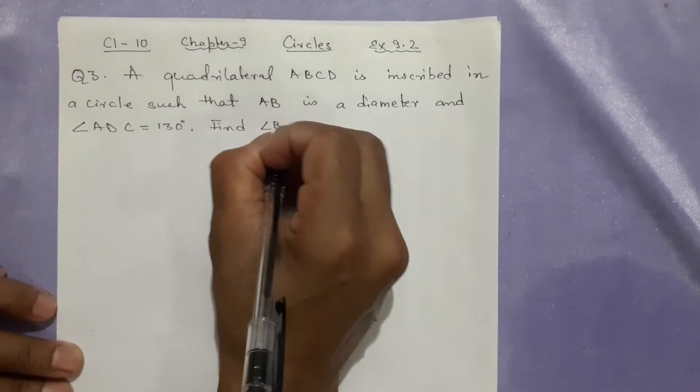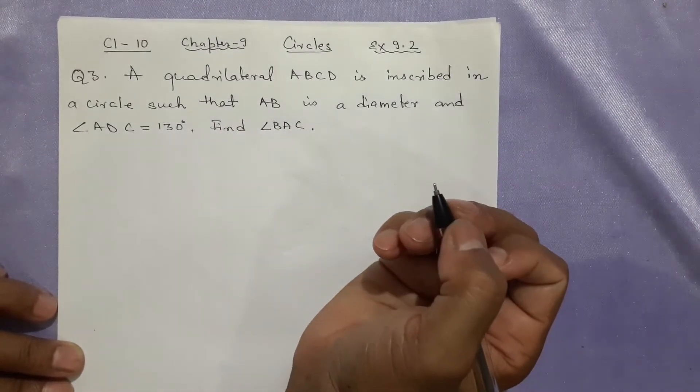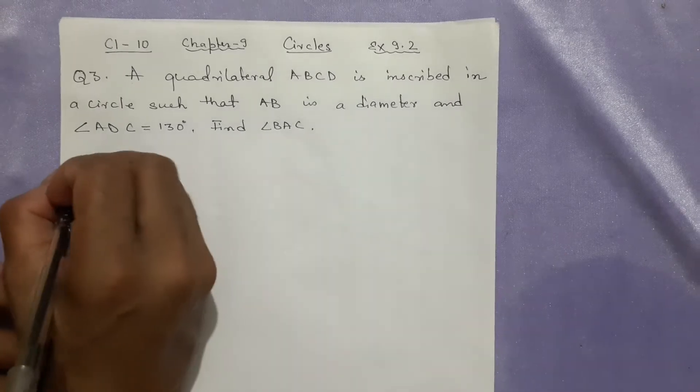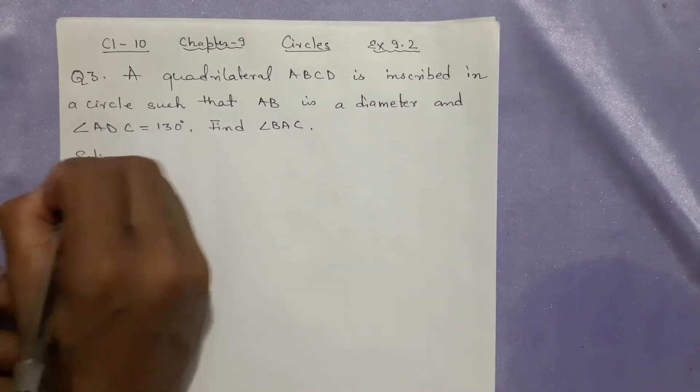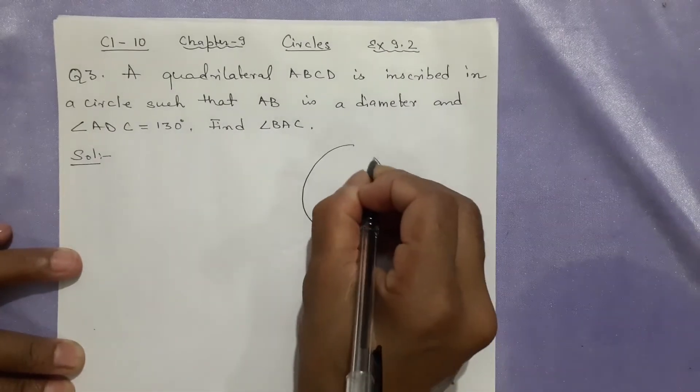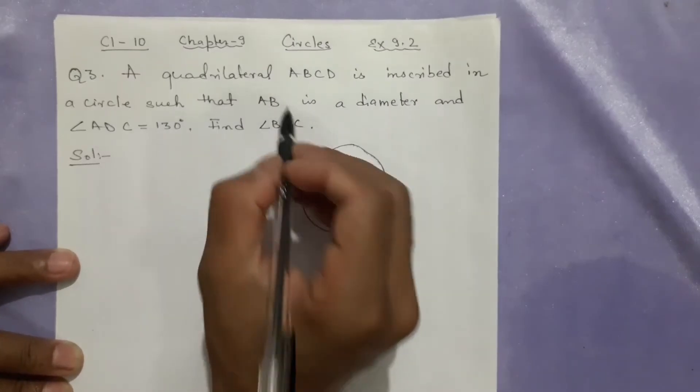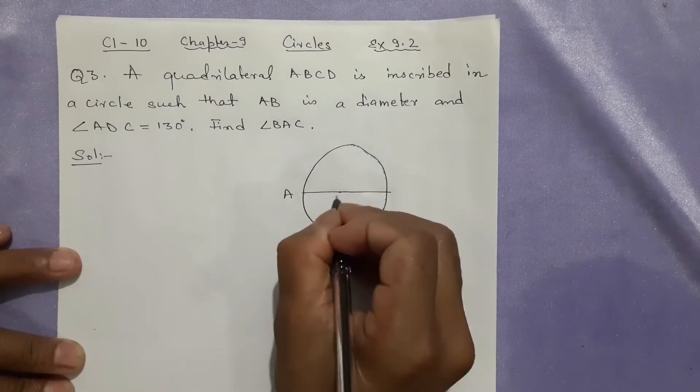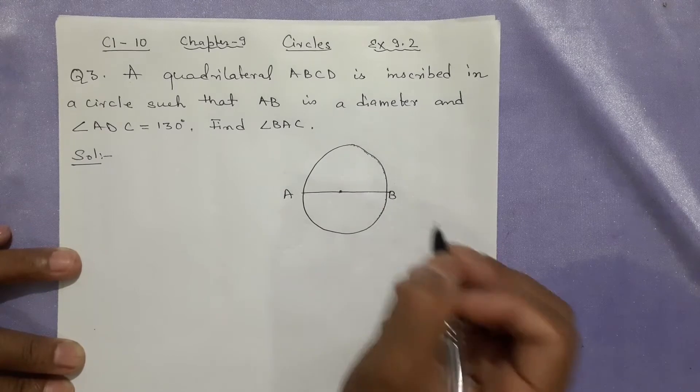This is in your textbook, NCERT page 206. You can see the diagram there also, but it's not given in the question—you will draw it. The diagram will be like this: AB is the diameter, so AB will pass through the center. No need to show the center; it's understood that it's a diameter.